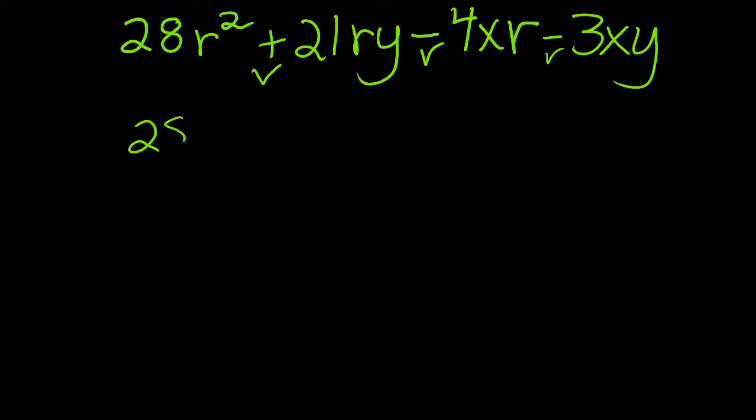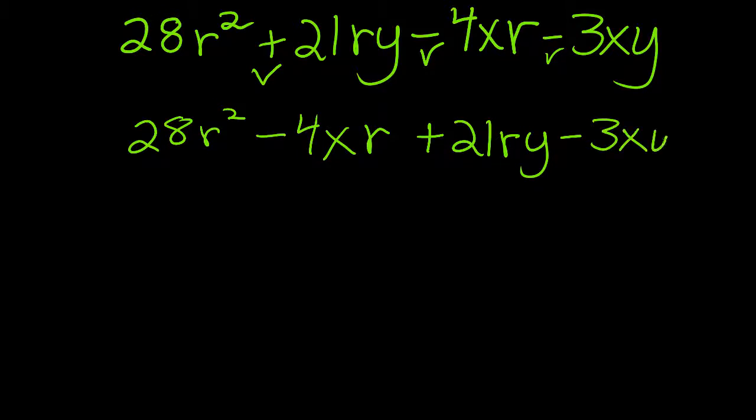So that I have 28r² minus 4xr plus 21ry minus 3xy. Now I have a plus sign in the middle, which means I don't have to worry about changing signs.